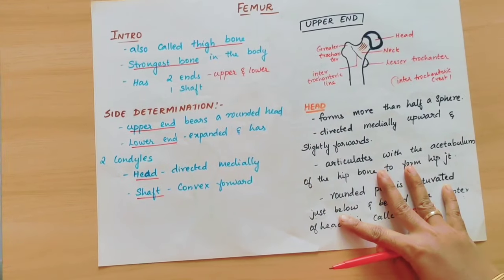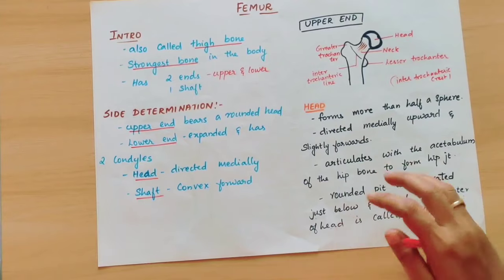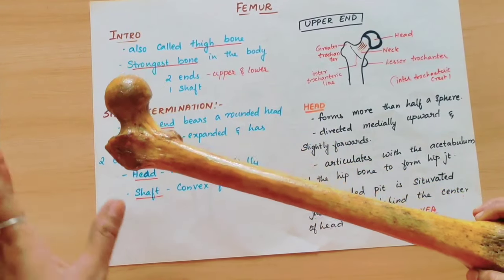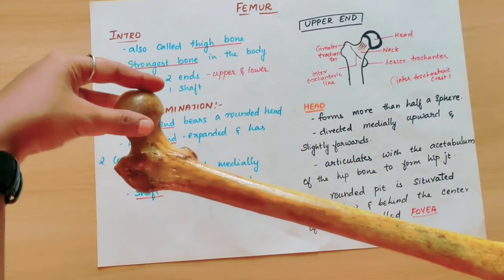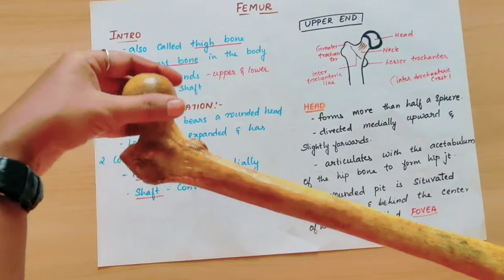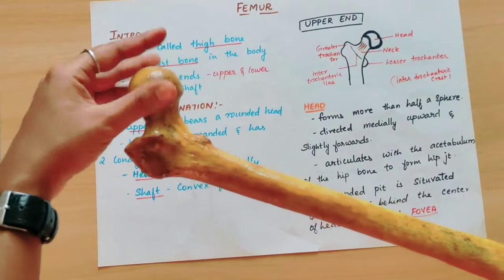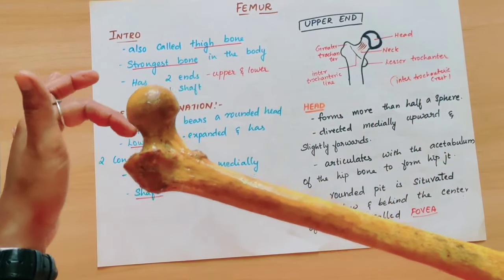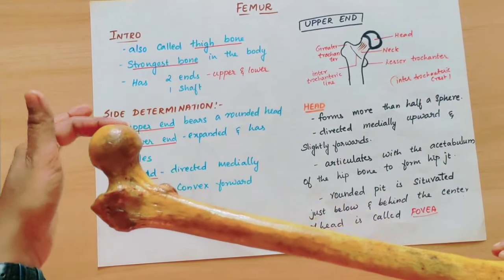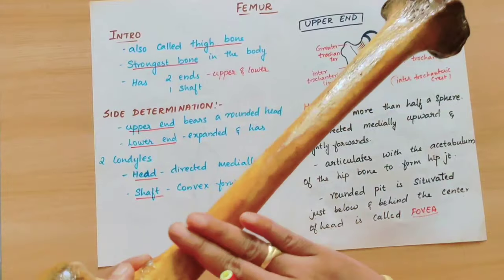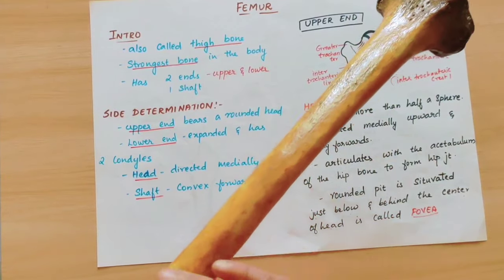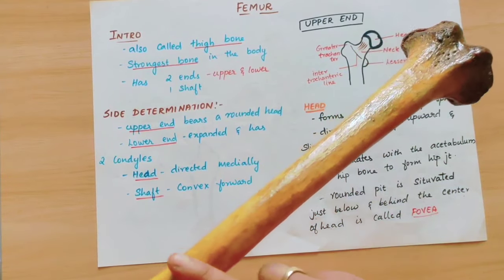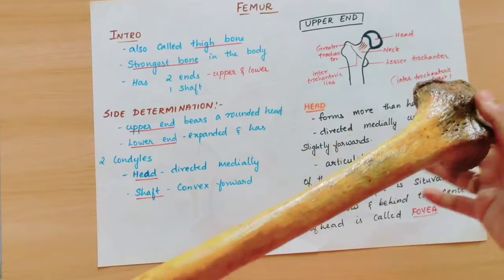Coming to the side determination of the bone. If you have to make the side determination, the most important point is: first, the head is rounded, and this head is on the medial side. The rounded head is always on the medial side. The anterior surface of the shaft is smooth, convex, and faces forward.